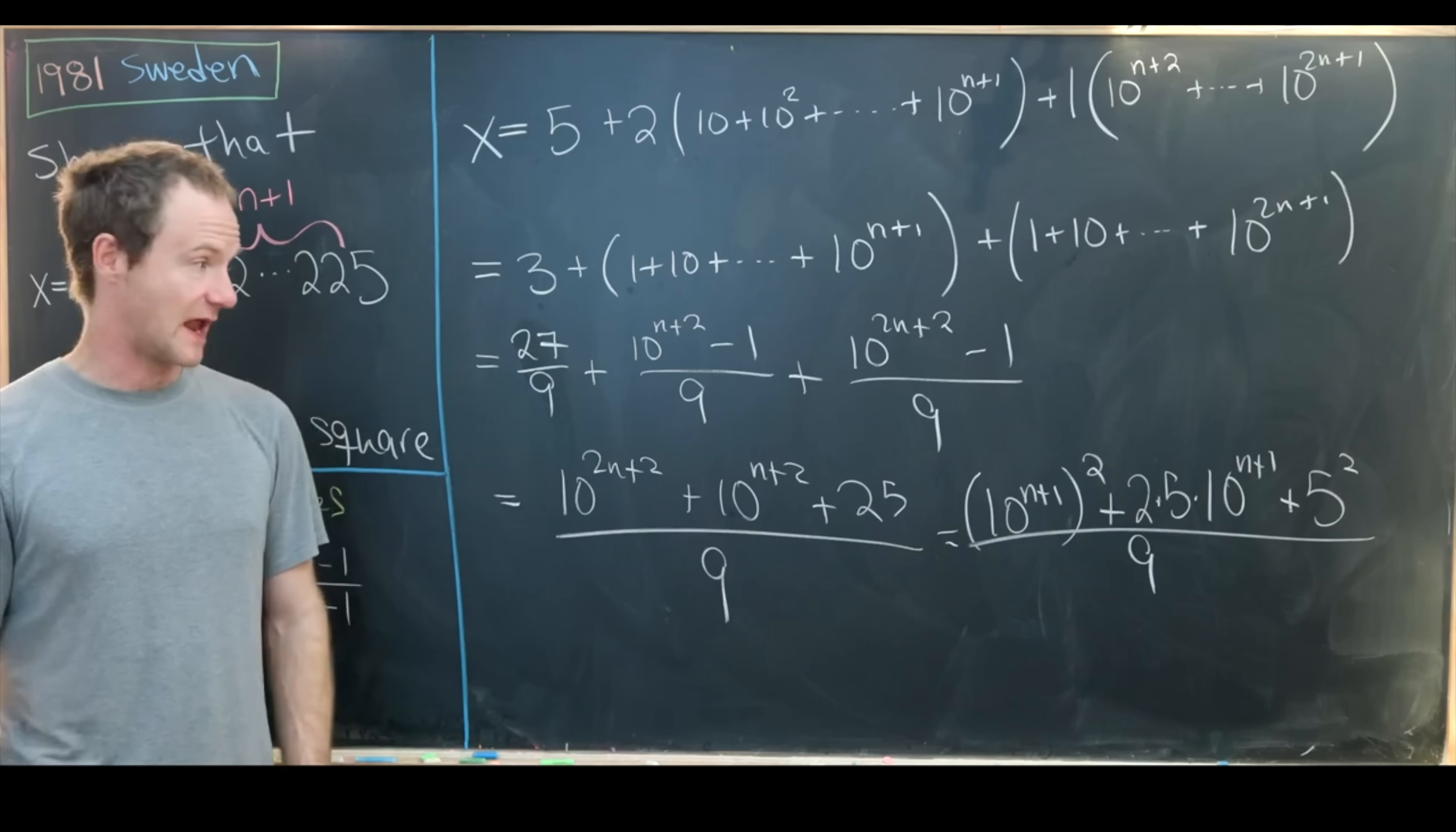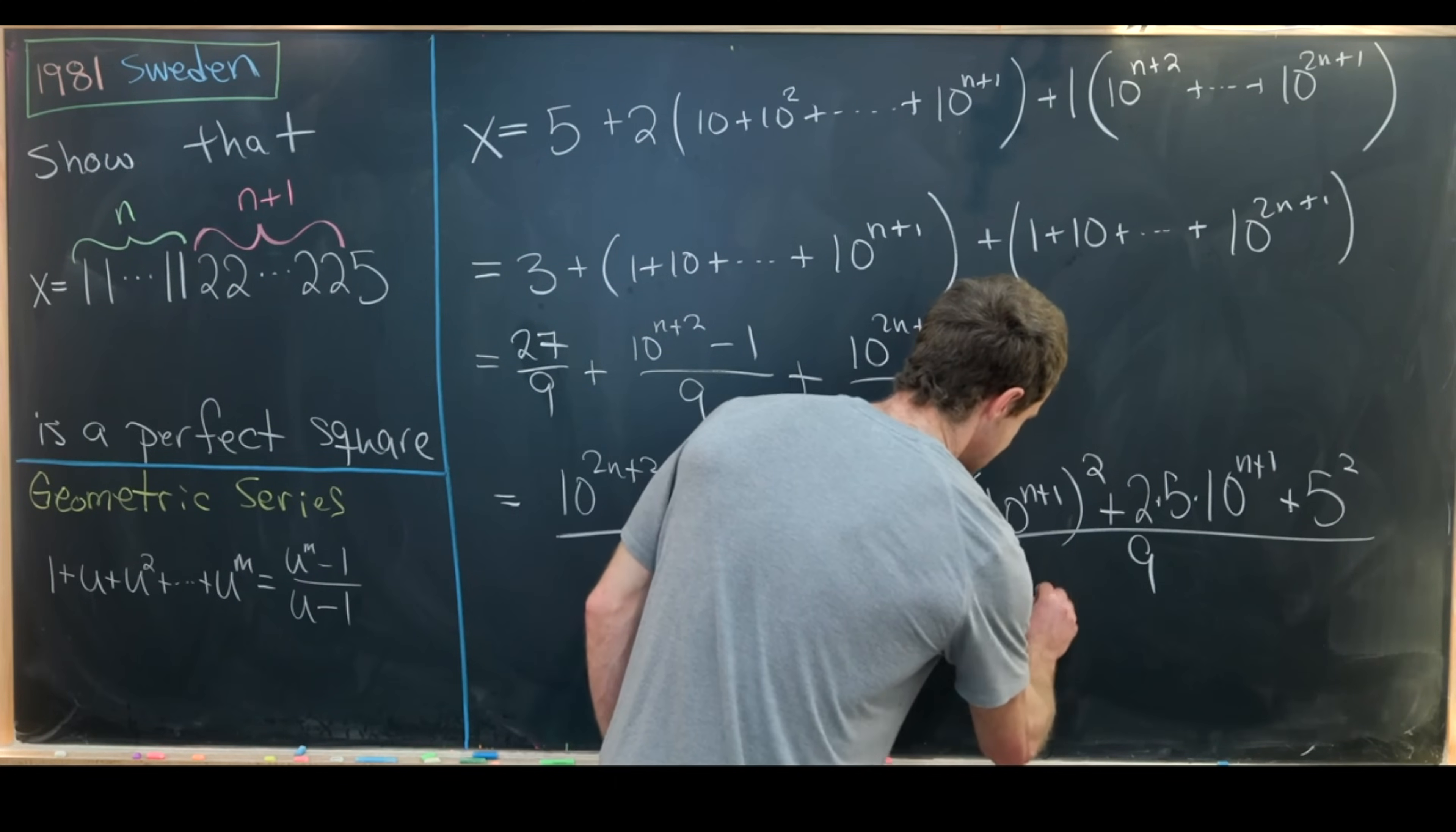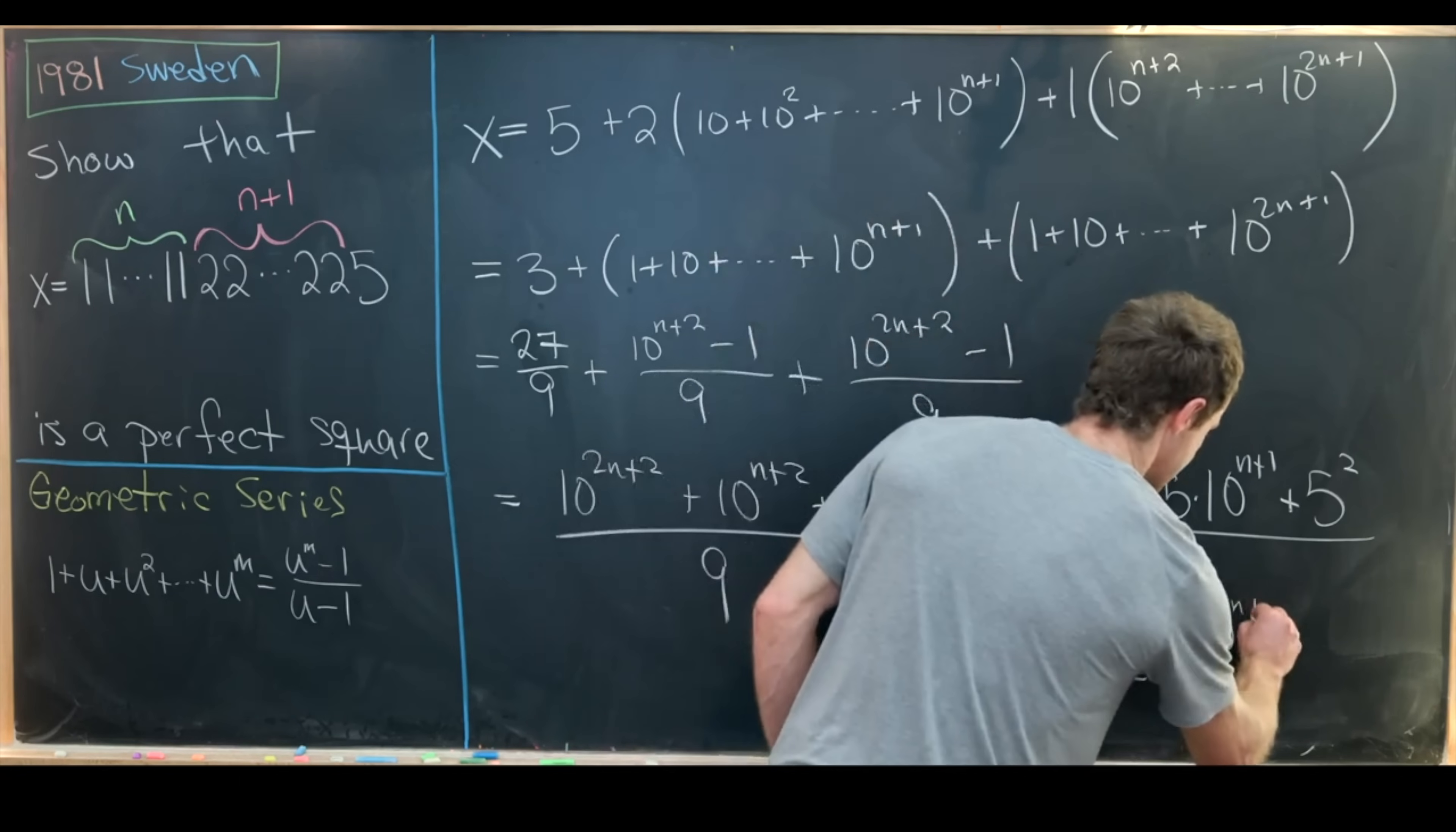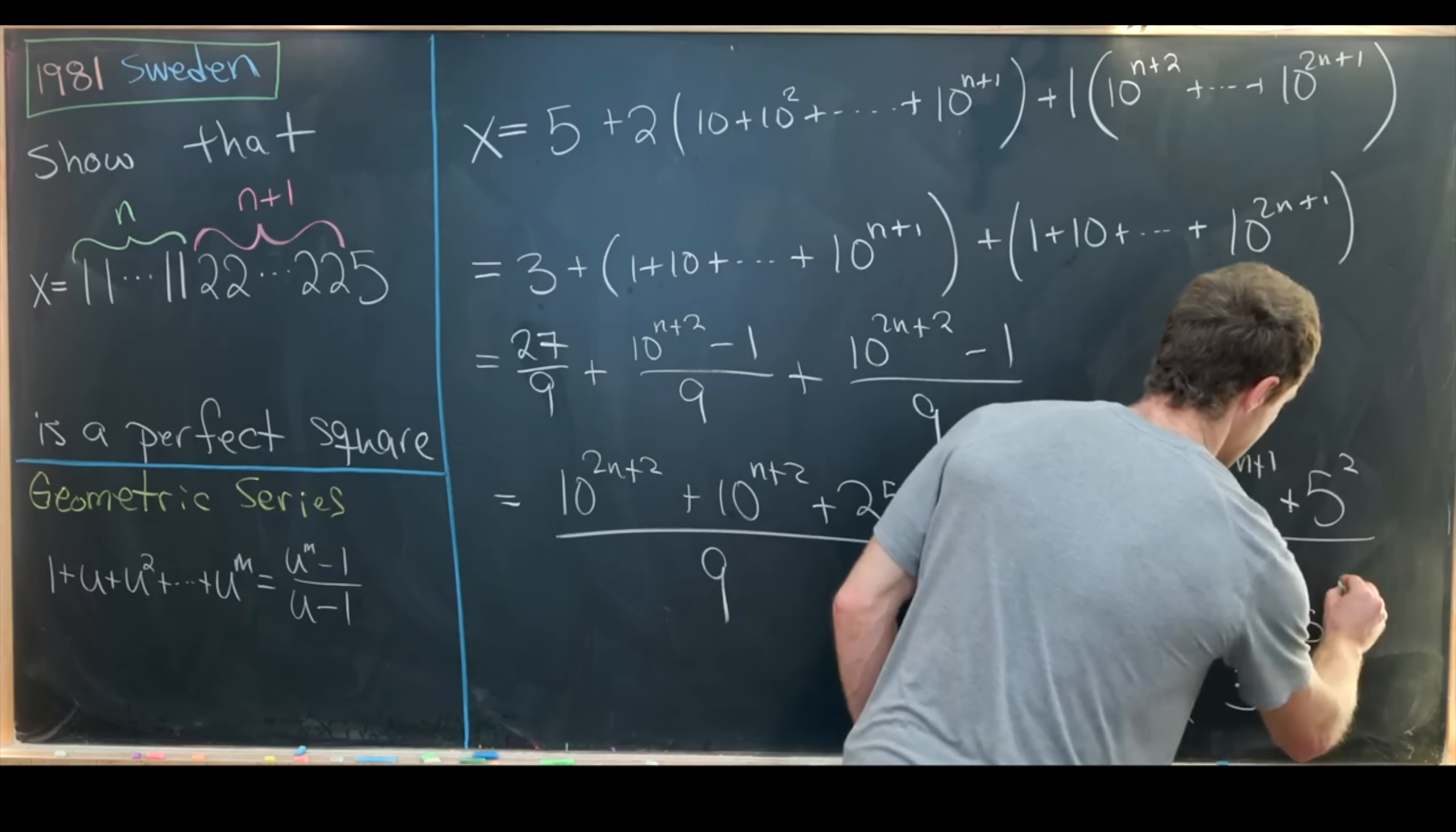But what we have in the numerator now can easily be factored. That factors as (10^(n+1) + 5)² all over 9, which we can rewrite as ((10^(n+1) + 5)/3)².